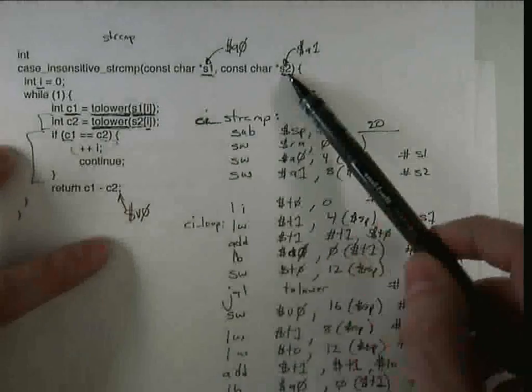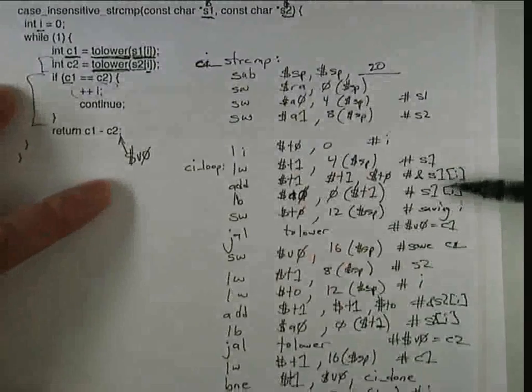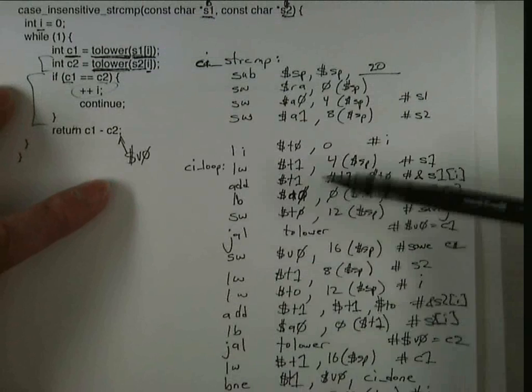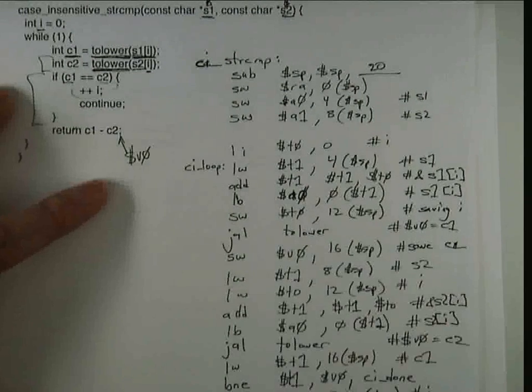Because s1 and s2 aren't modified in the loop, we only need to load them right before we use them. But you can see that we're doing a lot of saving and restoring mixed up in the loop here.